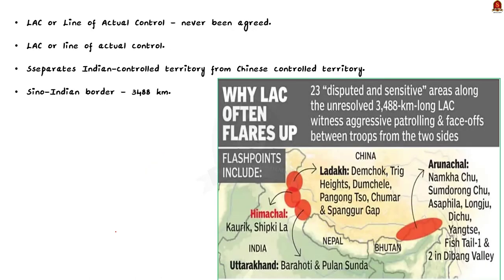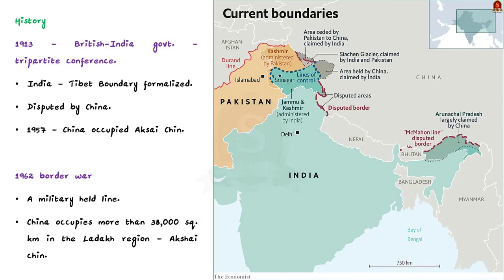In contrast, the alignment of the Line of Actual Control has never been agreed upon — it has neither been delineated nor demarcated. That is, there is no official map in the public domain that depicts the Line of Actual Control. This line can best be thought of as an idea reflecting the territories that are at present under the control of each side, pending a resolution of the boundary dispute. The LAC is the demarcation that separates India-controlled territory from China-controlled territory in the Kashmir region.